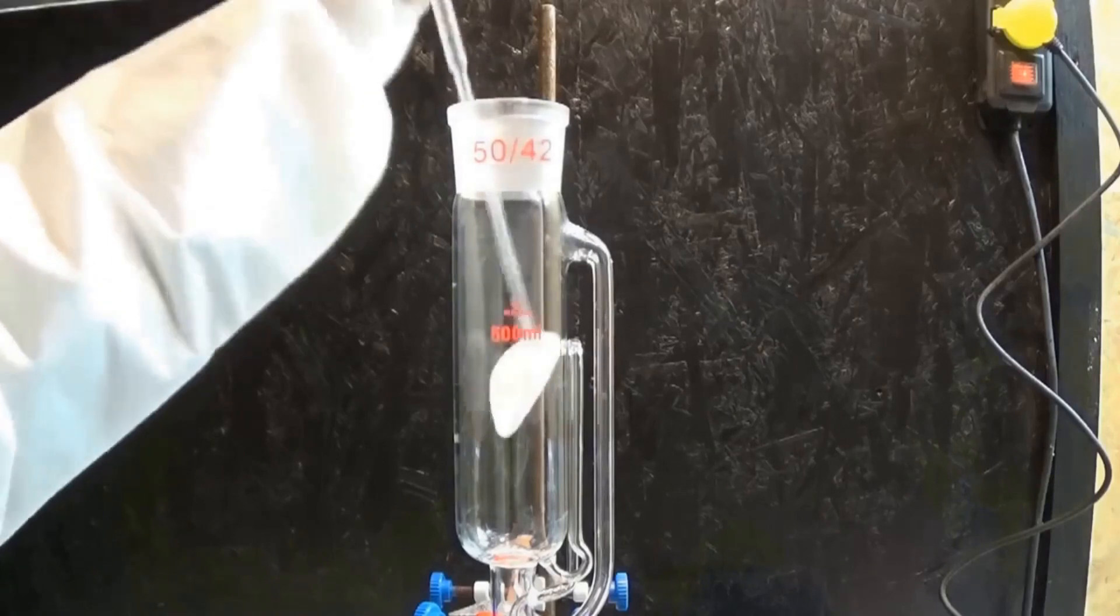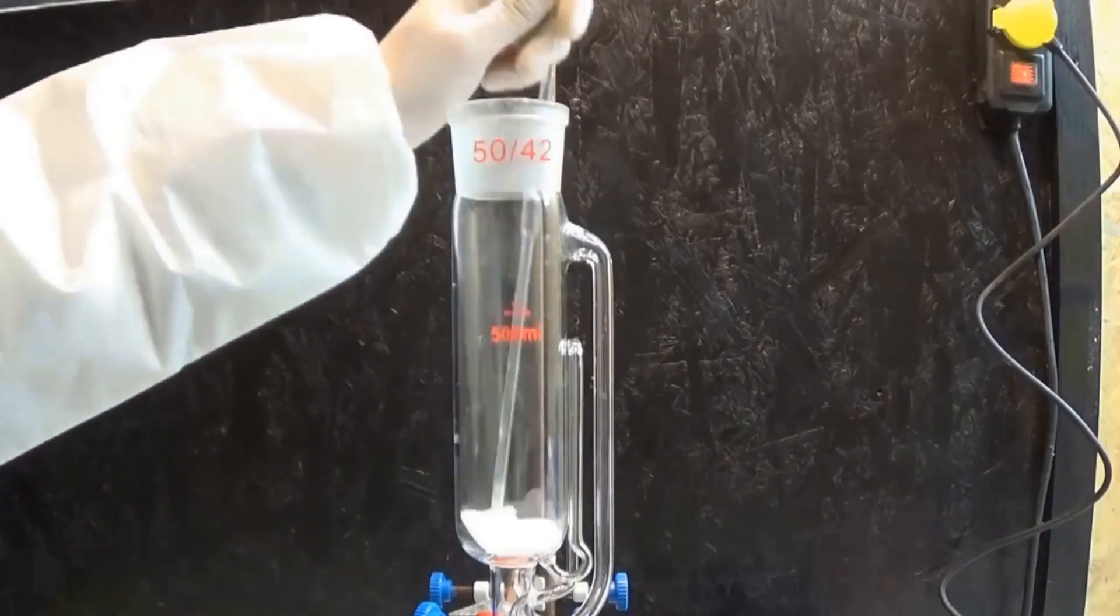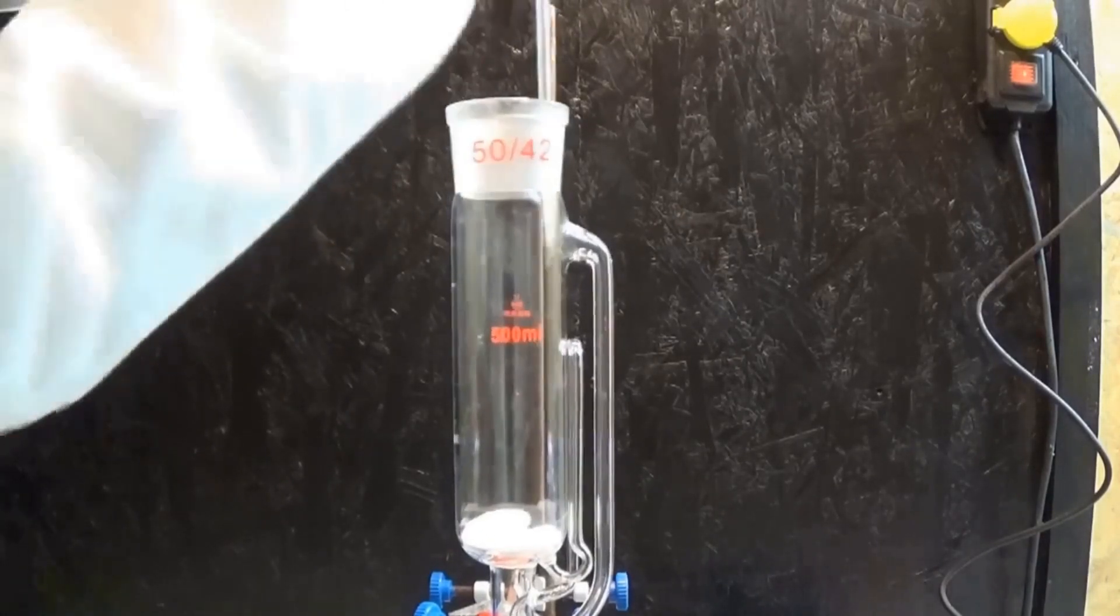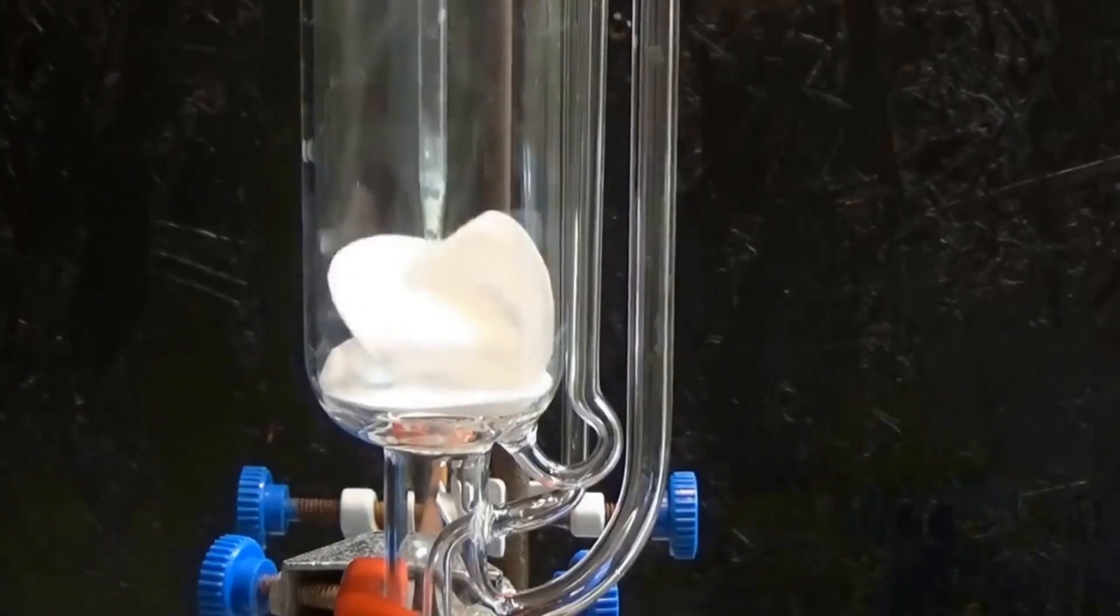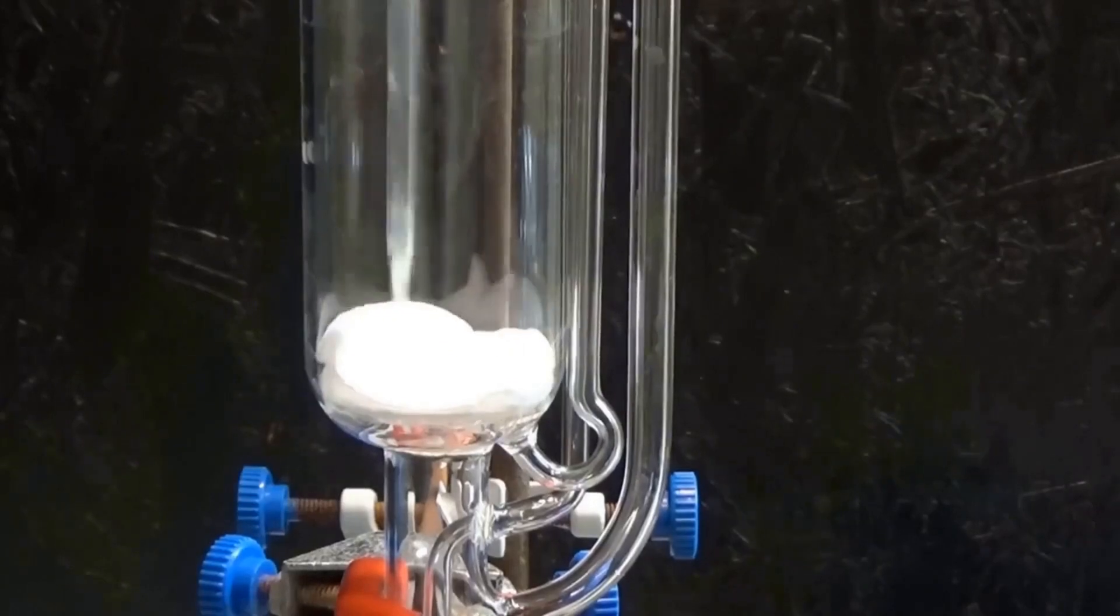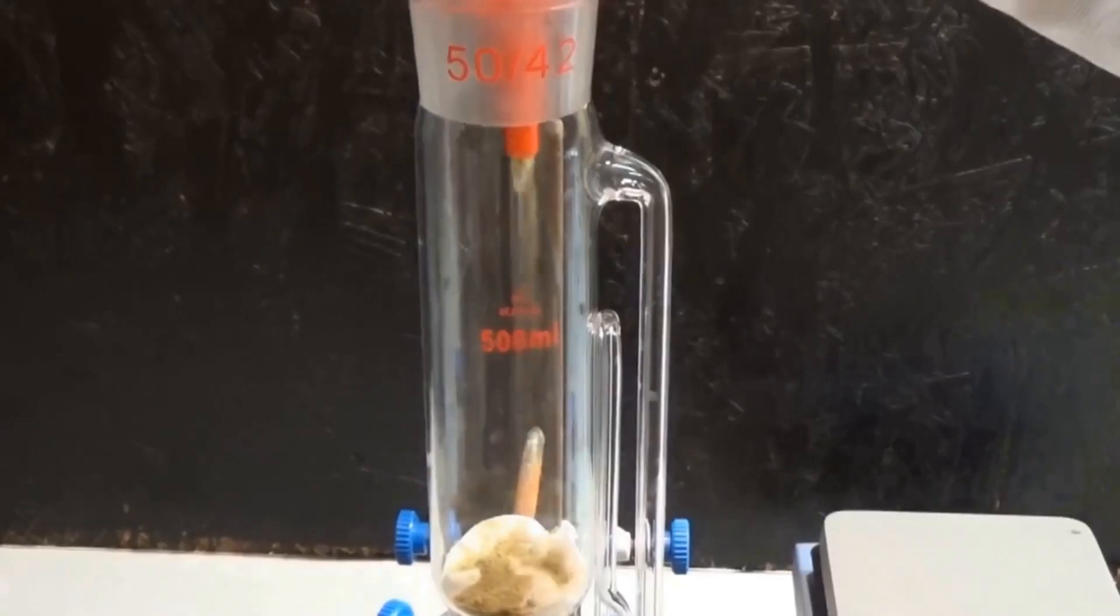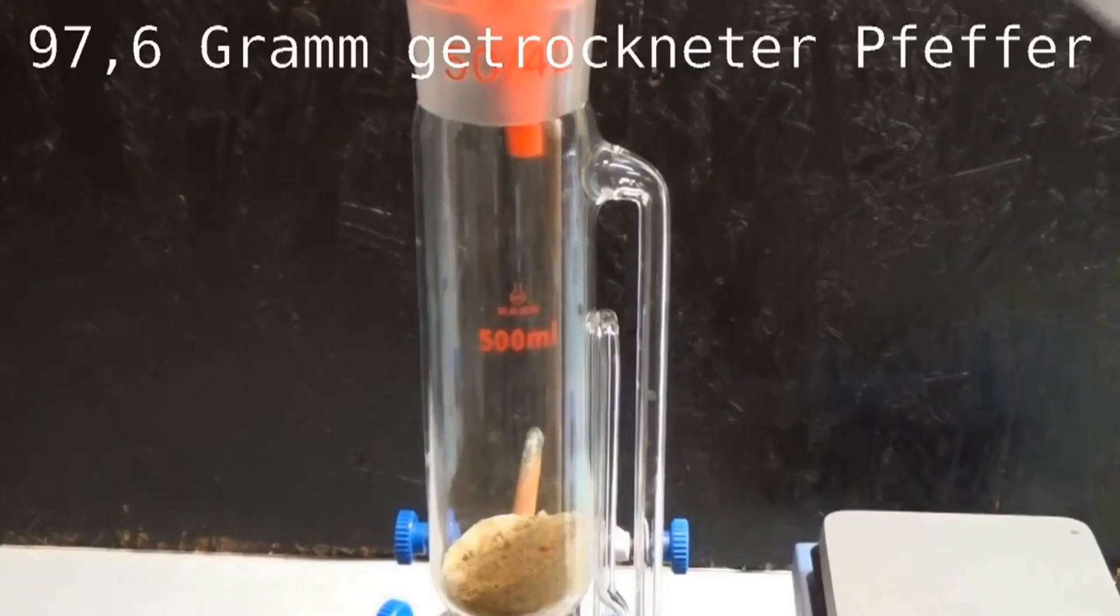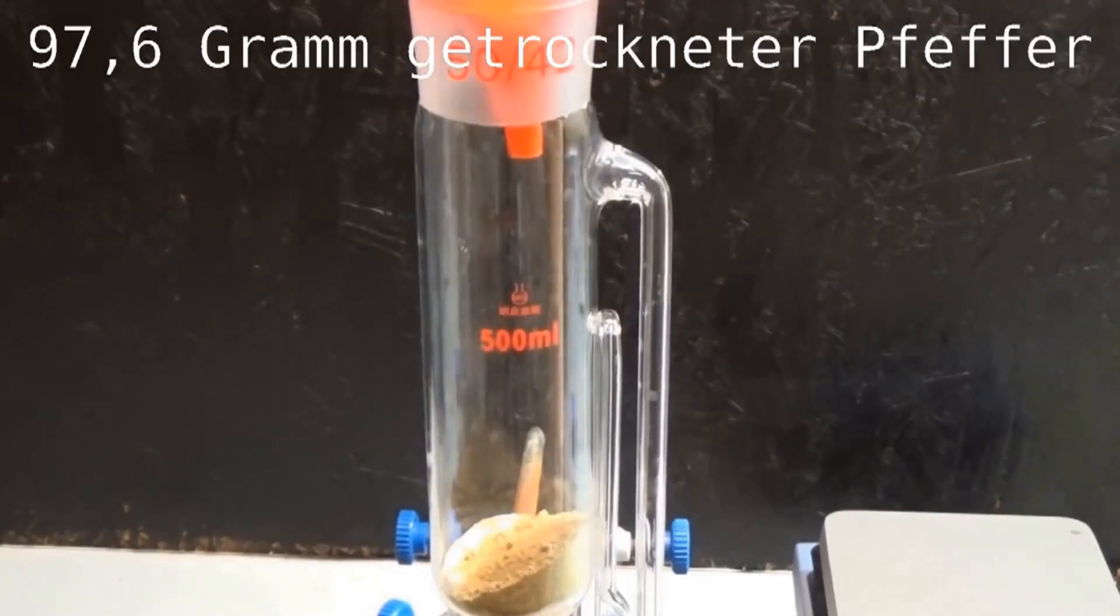Now cotton pads are inserted into the Soxhlet extractor to prevent the pepper from getting sucked into the siphon tube. This is one of two options, and you can also use a special cellulose shell for your extraction material. I decided to go with this approach because it allows me to fill in more material. But you have to keep in mind that your extraction material can lead to very slow flow rates of the solvent, thus decreasing the efficiency of the process. Now 97.6 grams of the pre-dried pepper are filled into the Soxhlet apparatus.